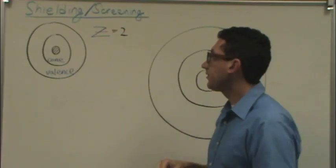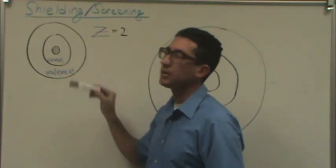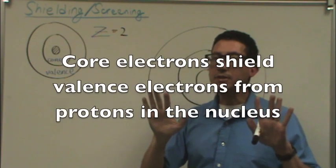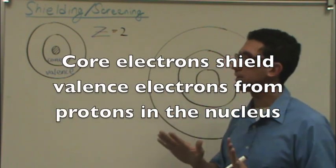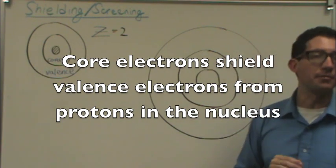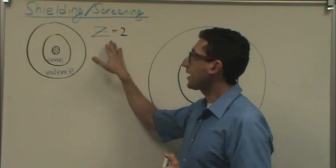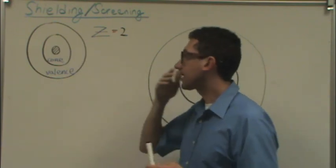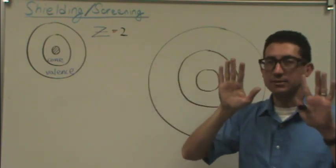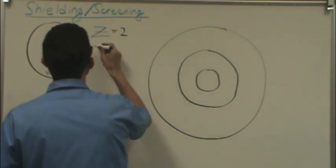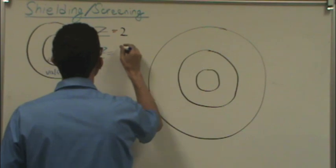Here's the problem. If there are too many core electrons, the valence electrons might be literally blocked or shielded from seeing the total number of protons in the nucleus. So whereas there might actually be two, the valence electrons, because they're so blocked by the core electrons, might, for example, only see one.